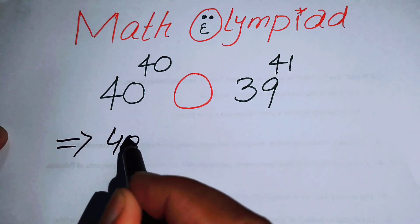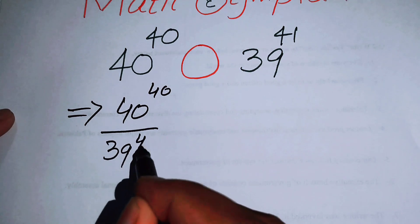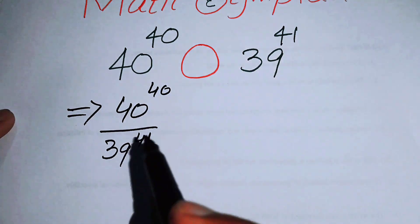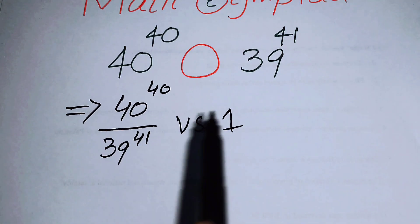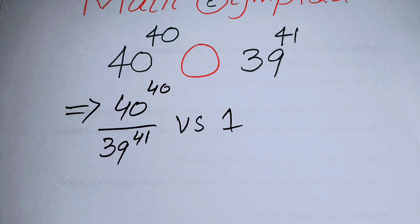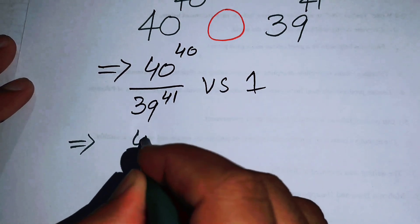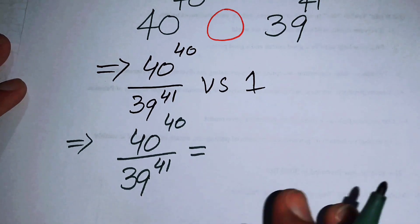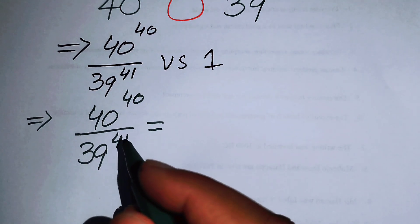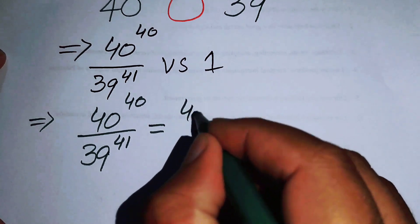I can rewrite the expression in the form of 40 to the power of 40 over 39 to the power of 41, in order to compare these two numbers. First, I will compare this expression versus 1. Now I take the left-hand side and simplify: 40 to the power of 40 over 39 to the power of 41.